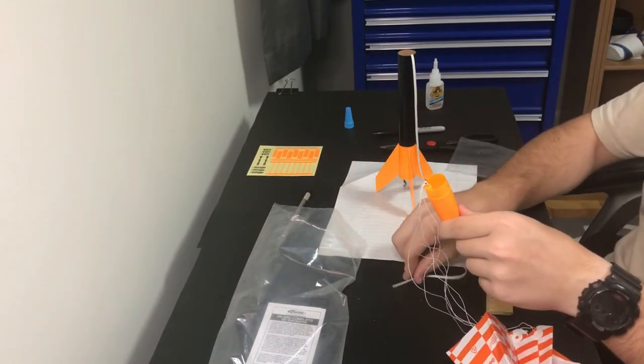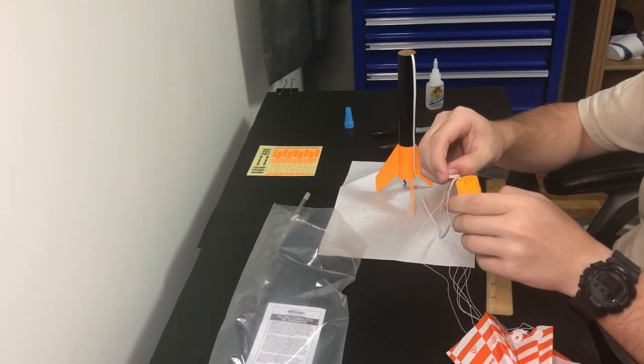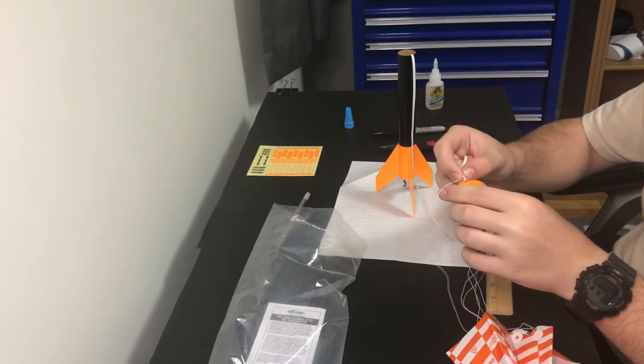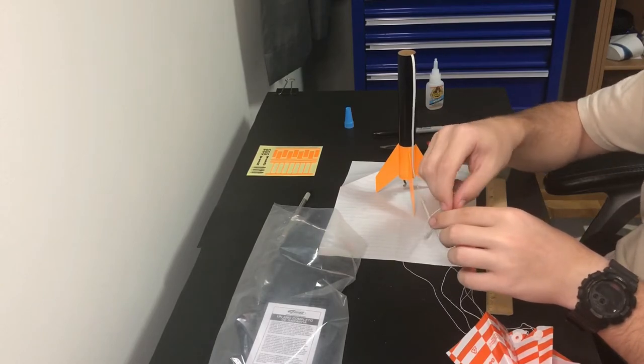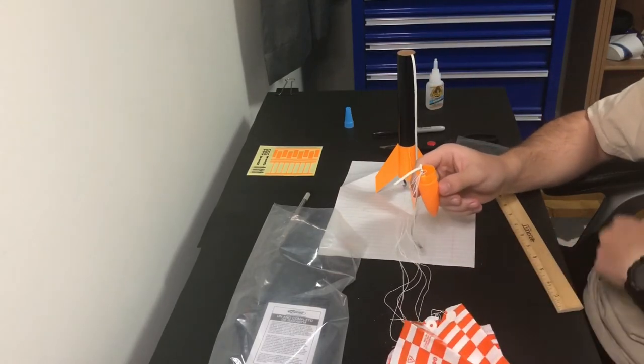You're also going to be attaching this rubber band to the nose cone. You're going to stick it in here and double knot it so that it doesn't fall out. Just like that, now our nose cone is attached to the body of the rocket and the parachute.